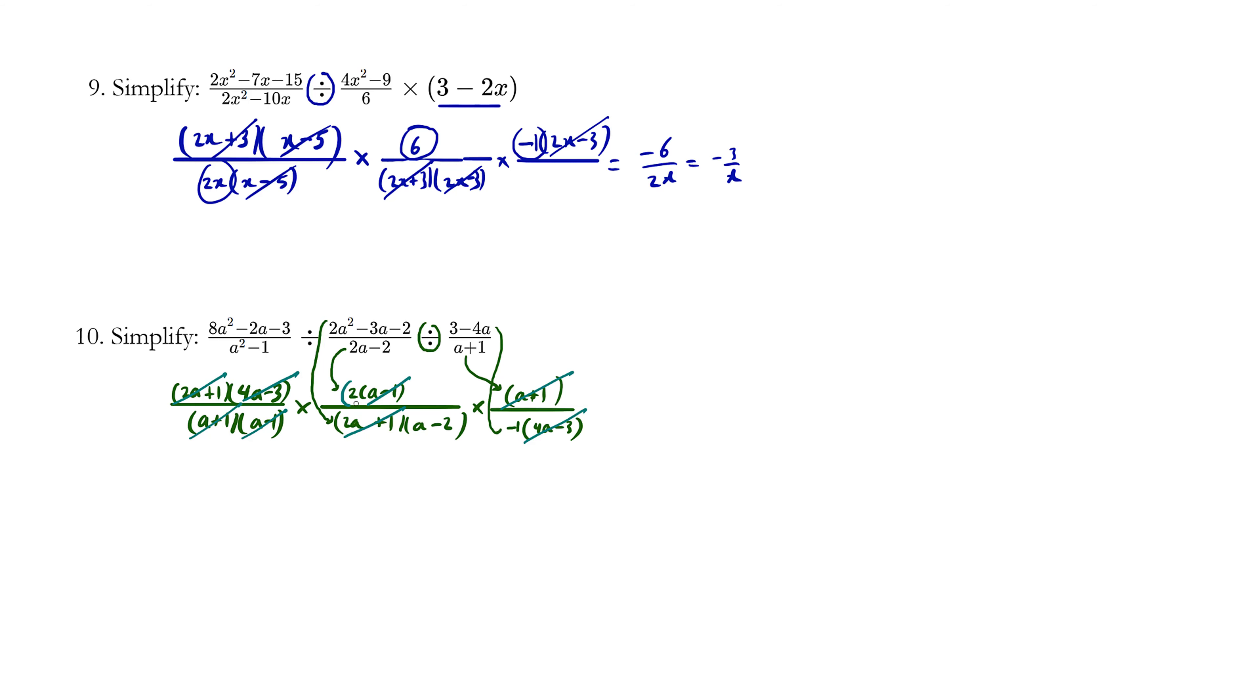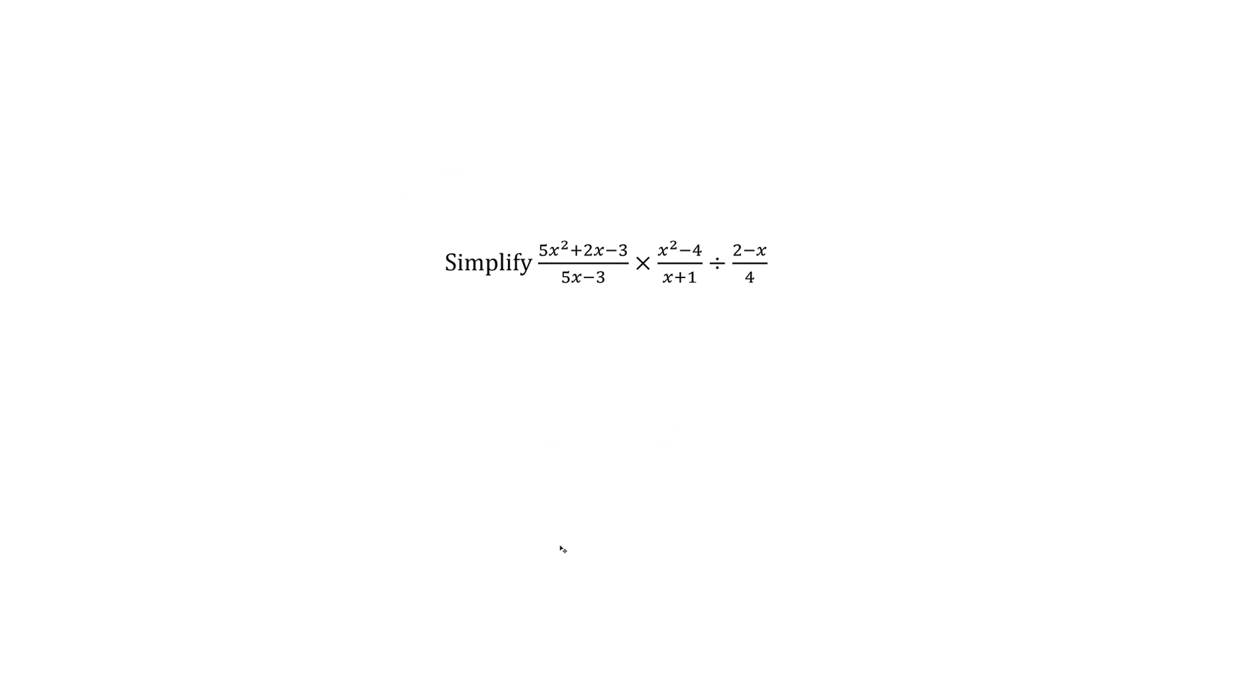So what's left over? We have a two here. We have a negative one here. And we have this factor over here. So this becomes two divided by negative one is just negative two. And in the denominator we have a minus two left over. Okay, so now it's your turn.